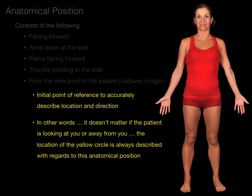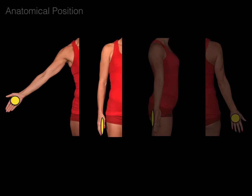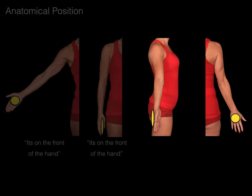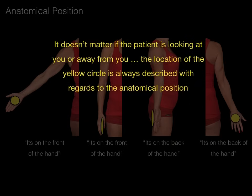It doesn't matter if the patient's looking at you or away from you or to the side. The location of the yellow circle is always described with regards to this anatomical position. So, for example, in these two pictures we would say the yellow circle is on the front of the hand, regardless of whether they're in the anatomical position or the hand is in a different position. Or we would say the yellow circle is on the back of the hand, regardless of the position of the patient.